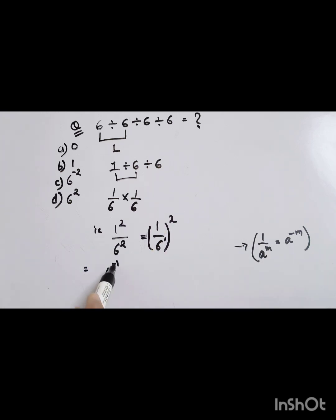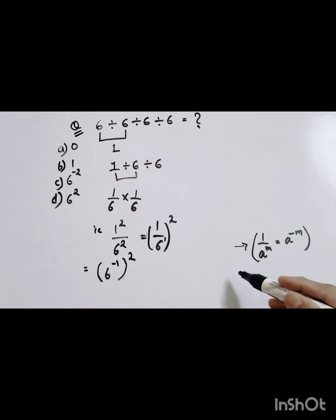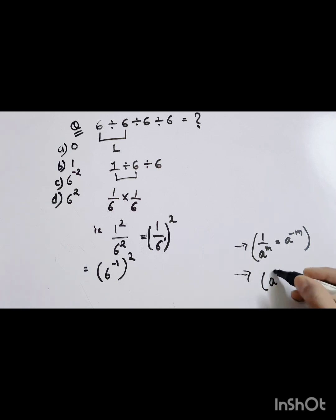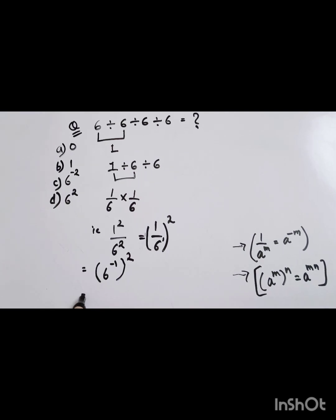So we have 6 raised to the power minus 1, whole raised to the power 2. Now we have power to power, so we apply another law: (a raised to the power m) whole raised to the power n means we multiply the powers. So we multiply minus 1 by 2.